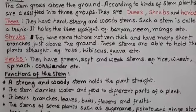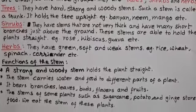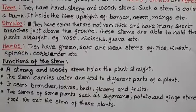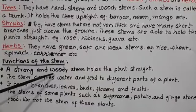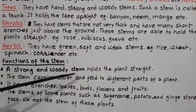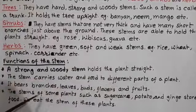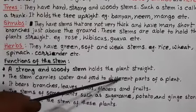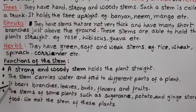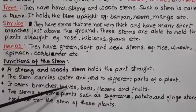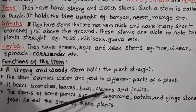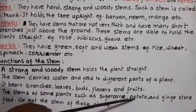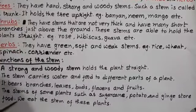Now we have to discuss about the function of stem. The stem is very important in the plant's body. A strong stem which is woody holds the plant straight. The stem carries water and food to different parts of a plant. It bears branches, leaves, buds, flowers and fruits. The stems of some plants such as sugar cane, potato and ginger store food.